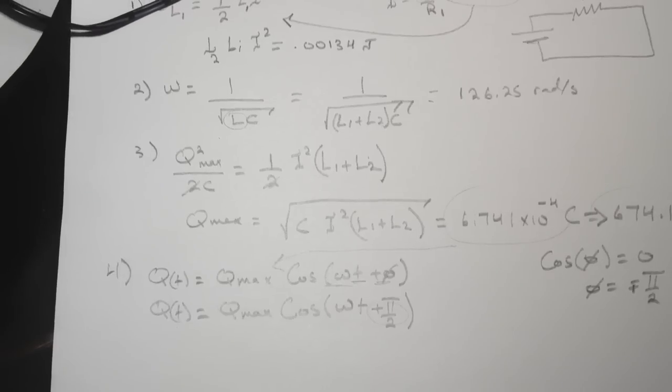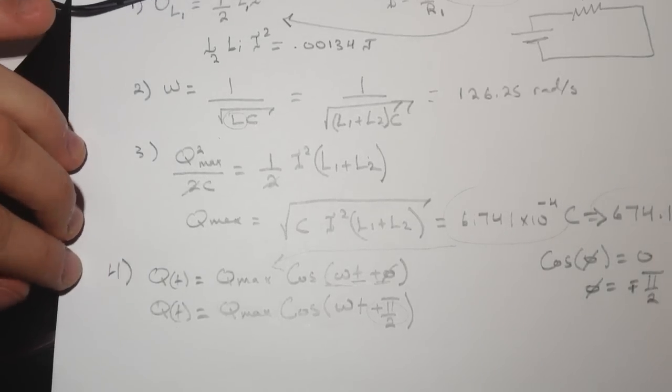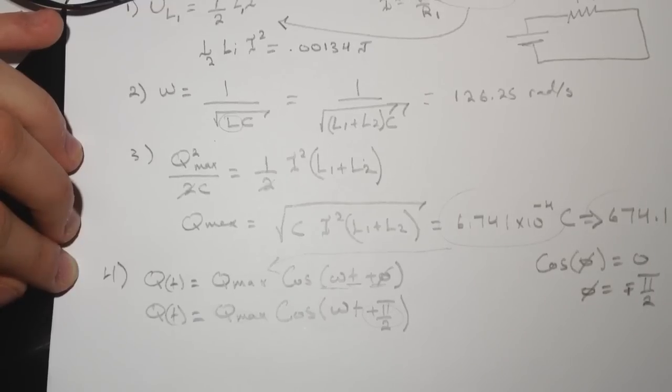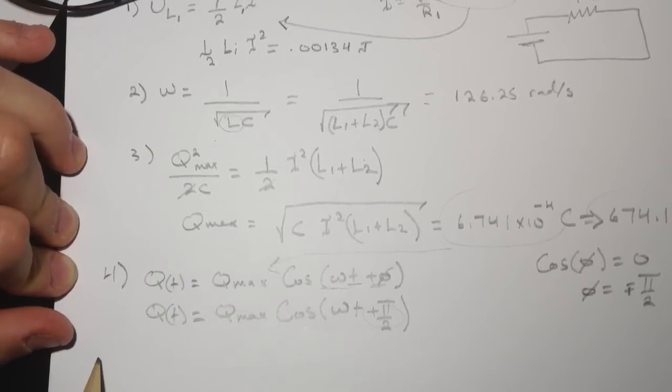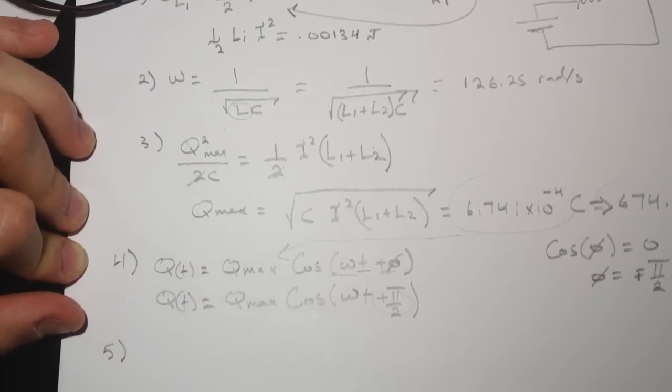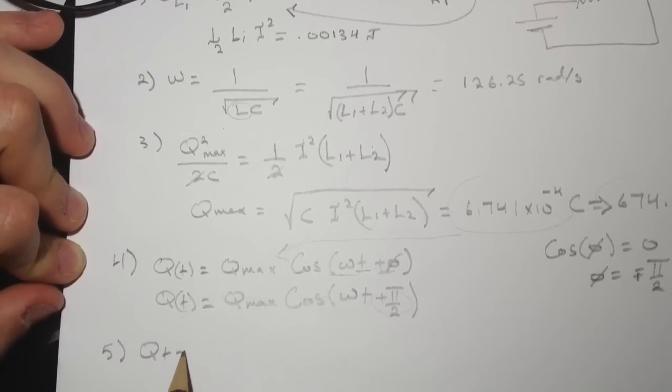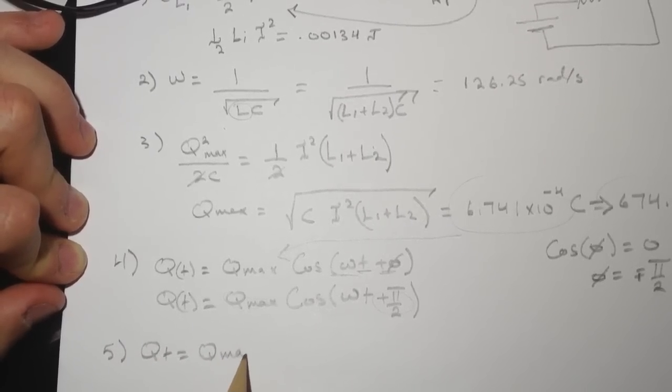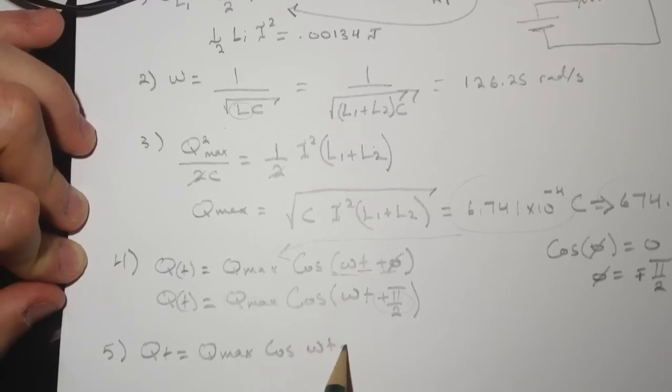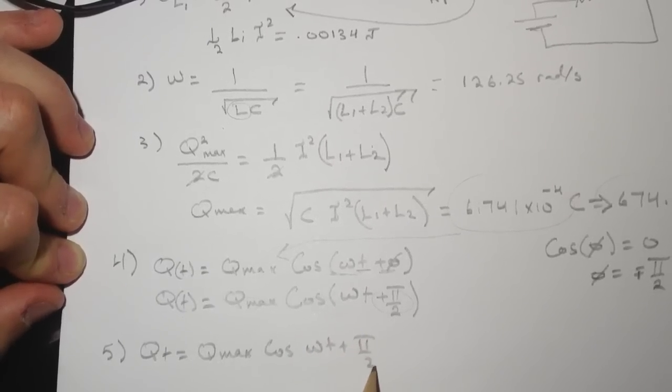Question number five, they're asking what is t2, the first time after the switch is open that the energy stored in the capacitor is maximum. For this one I use Q of t will be equal to Q_max, this is cosine omega t plus phi over 2.